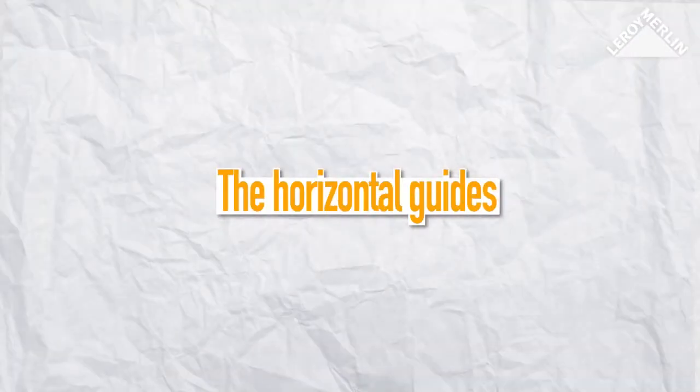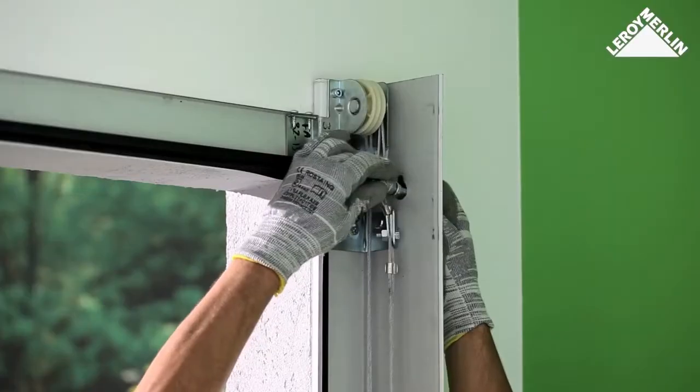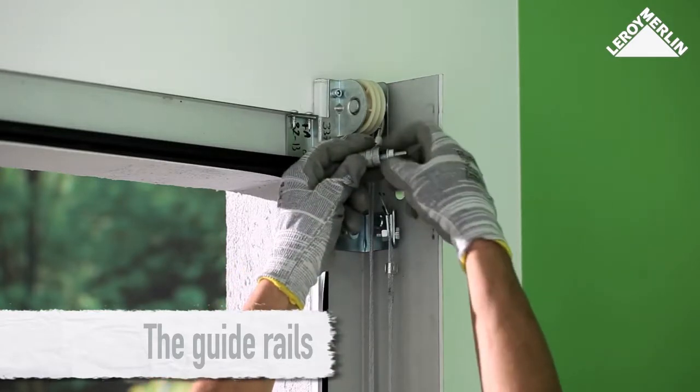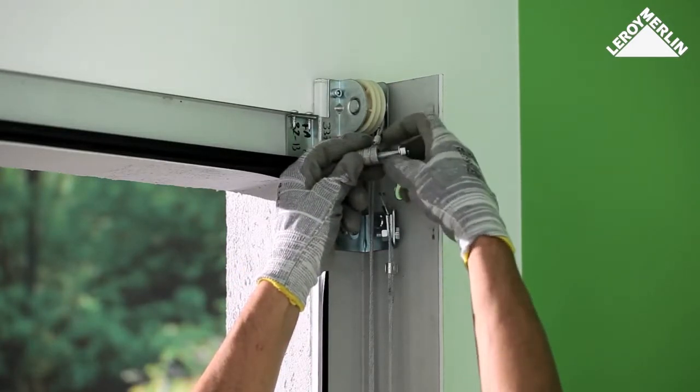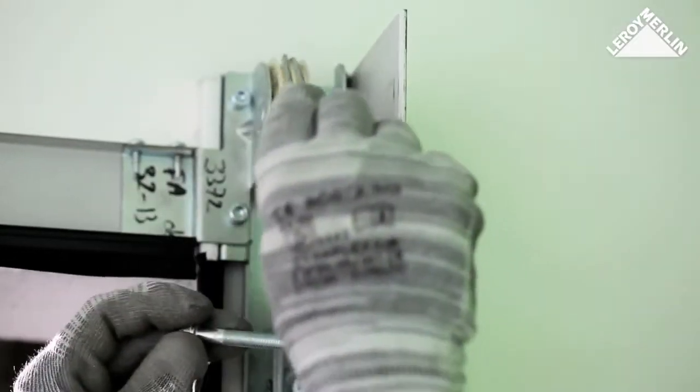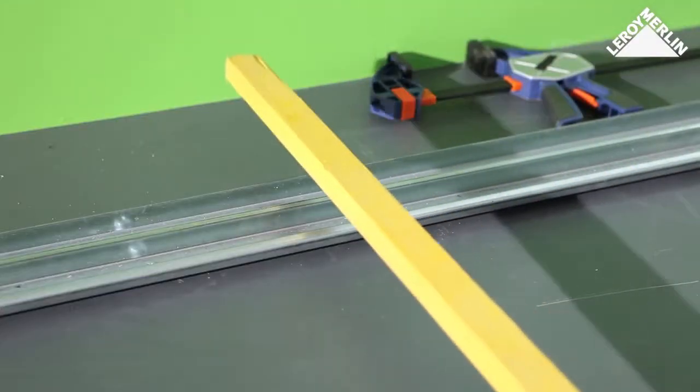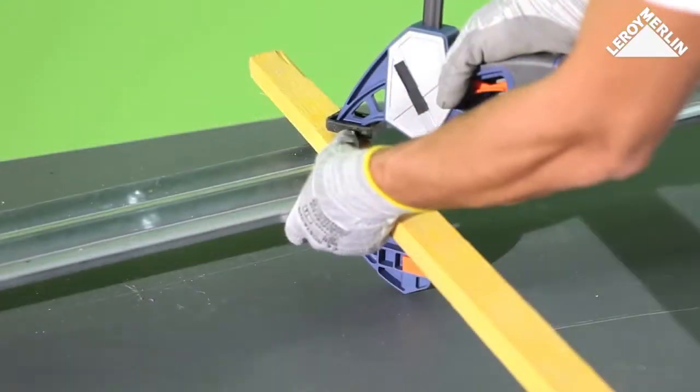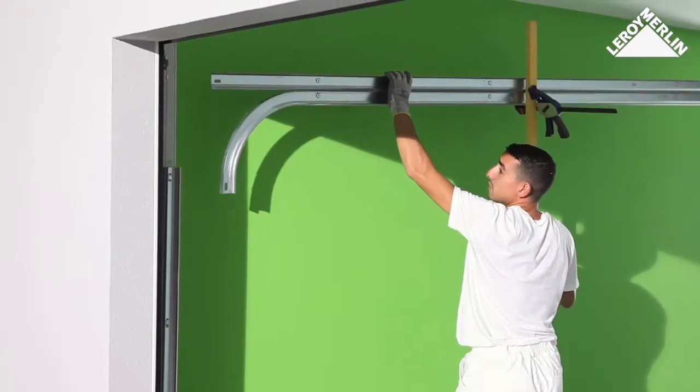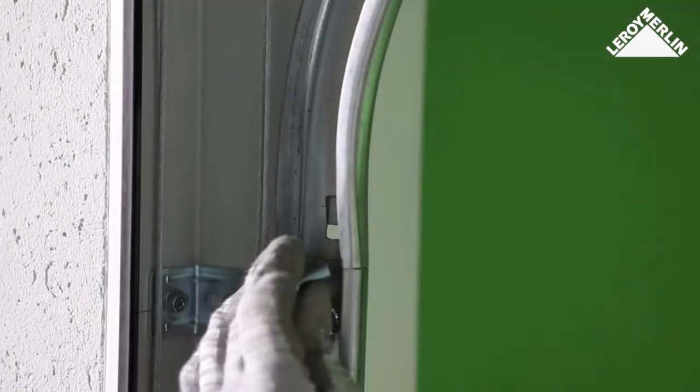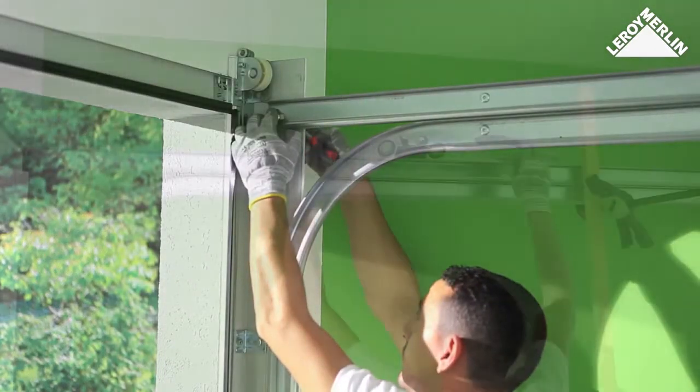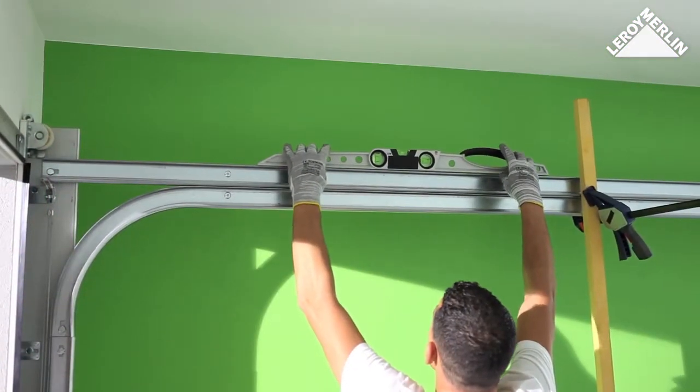The guide rails: Start by unscrewing the spring block to access the horizontal rail. To keep the assembly together while you put it in place, temporarily clamp a wooden batten to it. Connect the horizontal rail to the upper rail without tightening it fully. Check everything is level before tightening the screws.